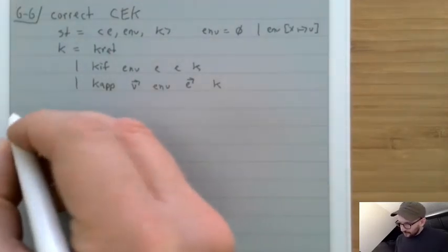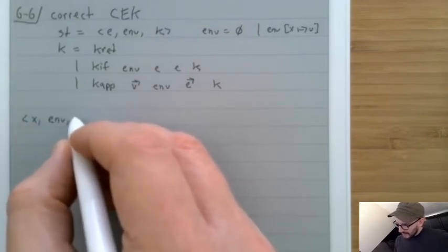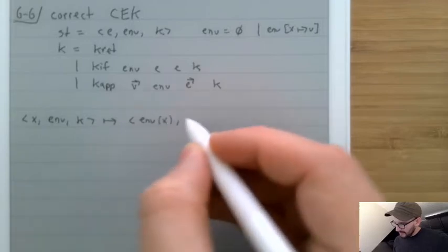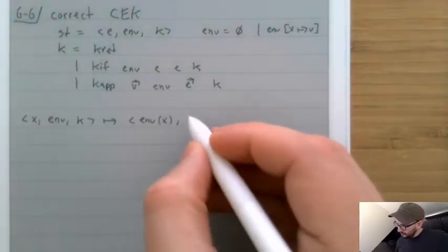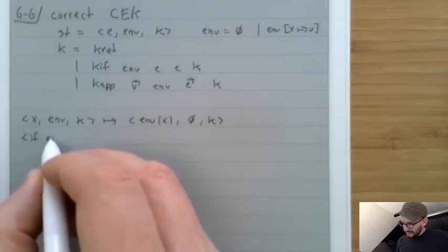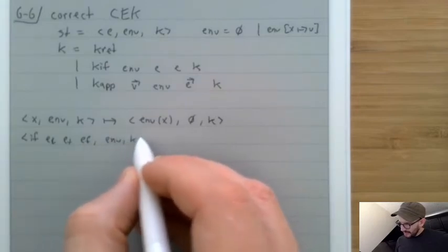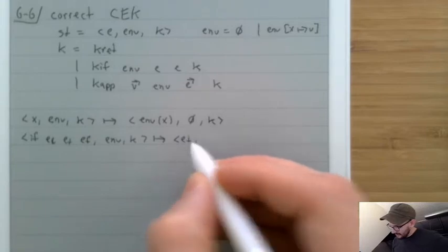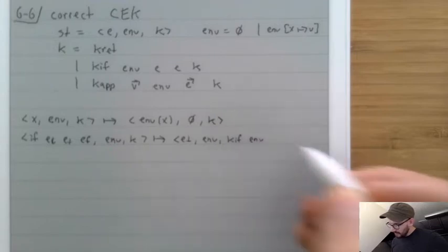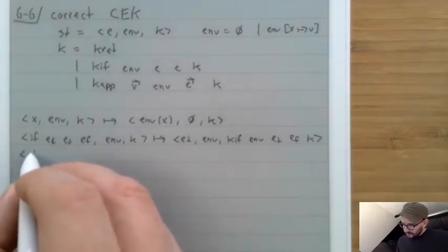In the correct CEK machine, states are (E, environment, K). Environments are empty or extended with X→value. Continuations are more complex: KRET as before; KIF now stores the environment that was around when it was made, plus ET and EF; KAPP stores a sequence of values, the saved environment, a sequence of expressions, and K. That saved environment is the crucial difference.